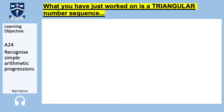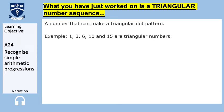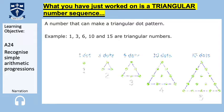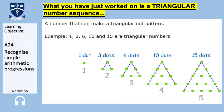What you have just worked out is a triangular number sequence — a number that can make a triangular dot pattern. For example, 1, 3, 6, 10, and 15 are triangular numbers. If you have a look at the dots, it goes 1 dot, 3 dots, 6 dots, 10 dots, and 15 dots, just like you had previously in square numbers. Each square number made a square; for triangular numbers, each triangular number makes a triangle, as you can see on the screen.